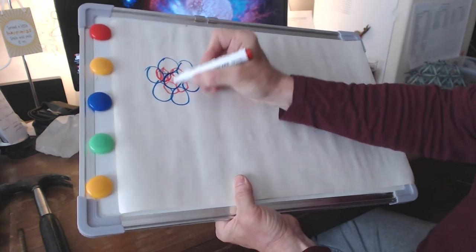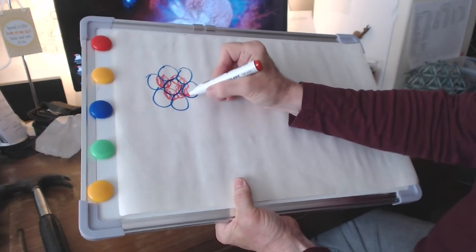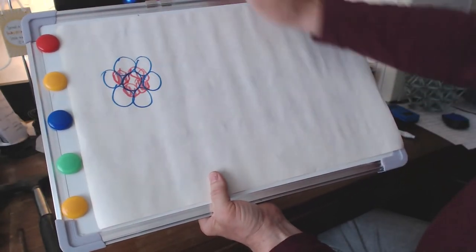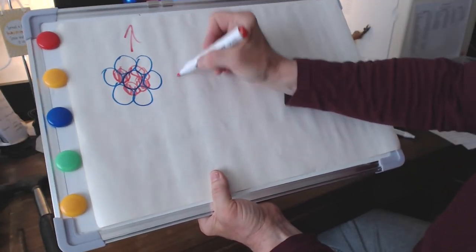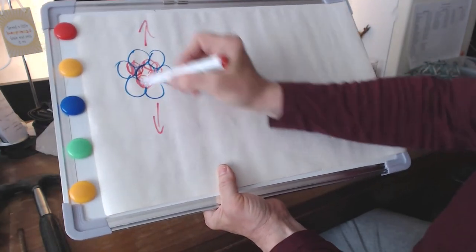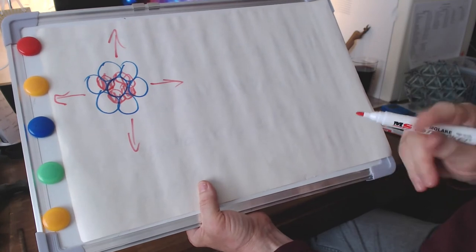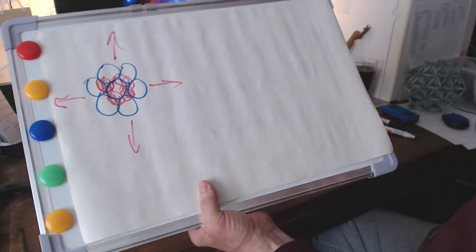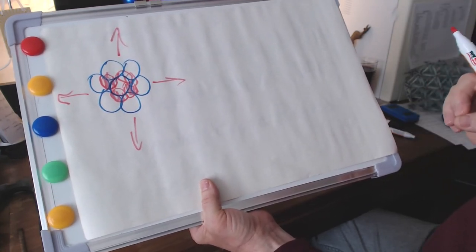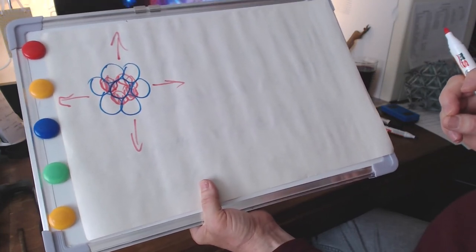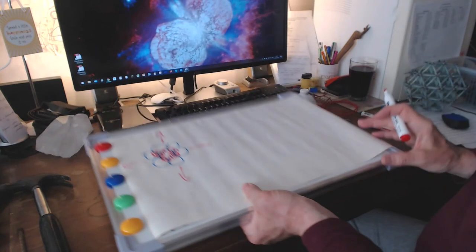So those are the favored sites for the next layer up. So we're going to have one there, and there, and there, and so on. And that spreads out in all directions. And the layer upon it will do exactly the same thing. The balls will sit in the hollows created by the atoms in the layer below. Okay, so that's hexagonal close-packed.